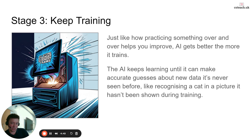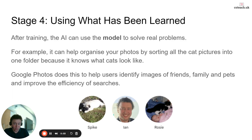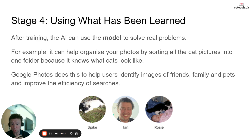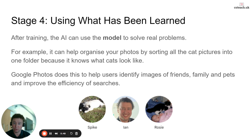You repeatedly train until the AI can take a picture of a cat it's never seen before and say with certainty that's a cat — that's when you know it's a fantastically trained model. Then you've got to use it. The example pictures here are from my Google Photos. It has around 15,000 photos, and it's been analyzing the different elements to work out who I am, who my dog is, and who my cat is.